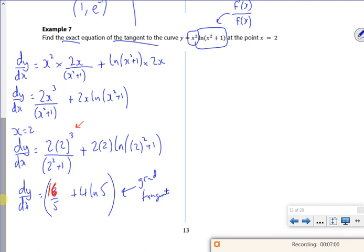So that would be my gradient. Let's do the y value. So the y value is 2 squared log of 2 squared plus 1. So y is 4 ln 5.